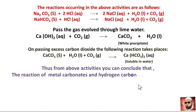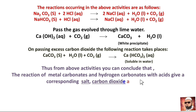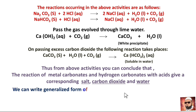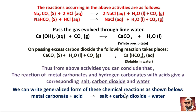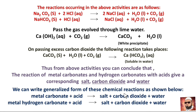From the above activities we can conclude that the reaction of metal carbonates and metal hydrogen carbonates with acids gives a corresponding salt, carbon dioxide, and water. In generalized form: metal carbonate plus acid gives salt plus CO₂ plus water; and metal hydrogen carbonate plus acid gives salt plus CO₂ plus water.